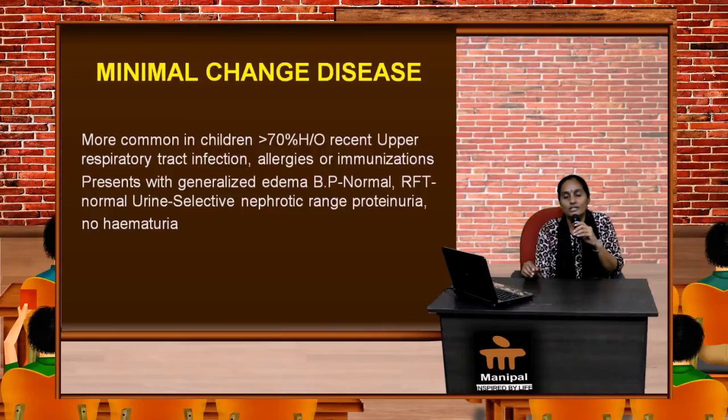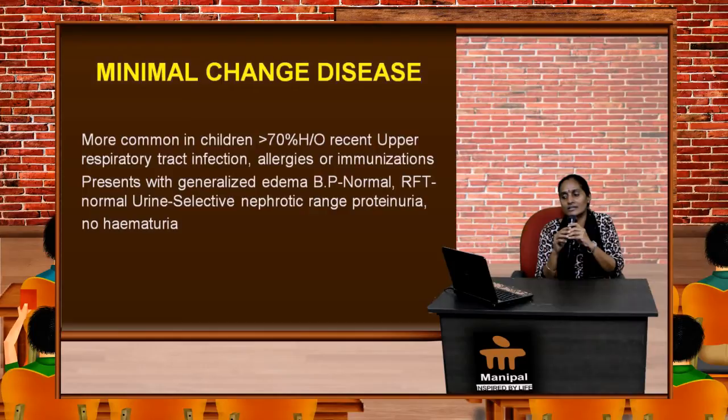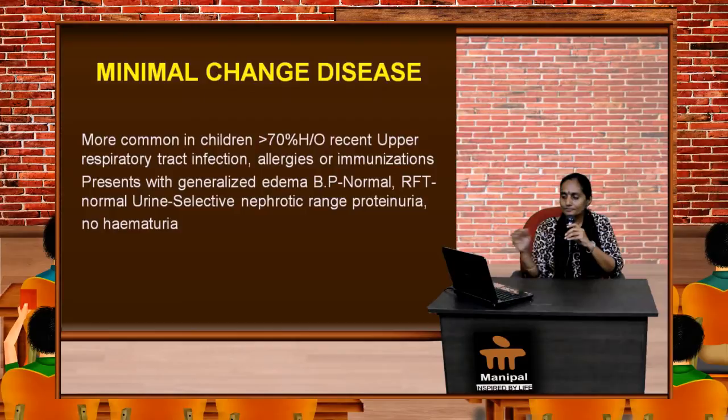Minimal change disease is the commonest cause of primary nephrotic syndrome. It is more common in children, and around 70% of them will have a preceding history of upper respiratory tract infection, known allergies, or immunizations. This usually presents with generalized edema or anasarca. Blood pressure will be essentially normal, and renal function tests will also be normal. Urine will have a massive proteinuria — the nephrotic range — defined as more than 3.5 grams per meter body surface area.